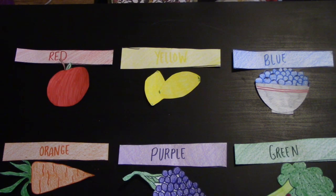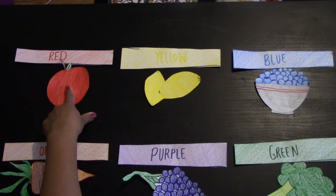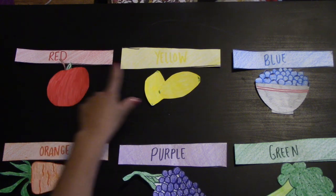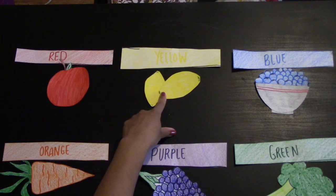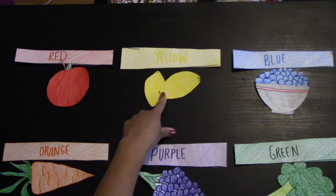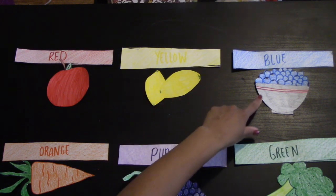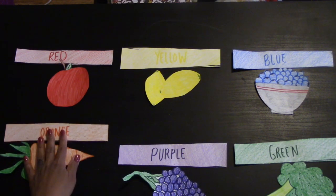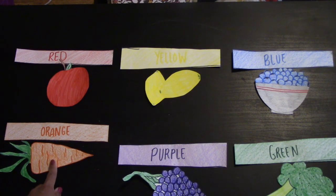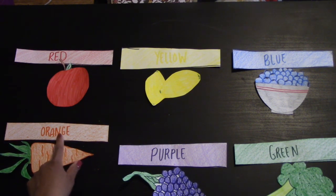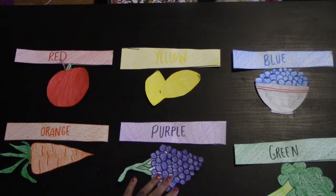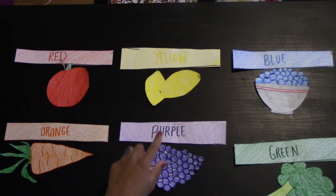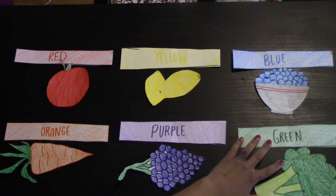Let's do that again. The apple is red. The lemons are yellow. The blueberries are blue. The carrot is orange. The grapes are purple. And the broccoli is green.